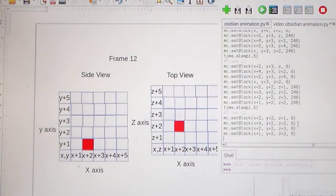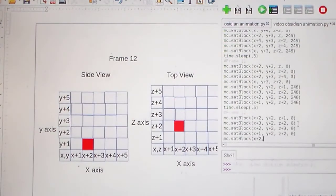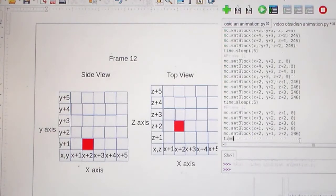And now we have to add our one block. So MC dot set block. And it's going to be at X plus 2, Y plus 1, Z plus 2. And that's 246 again.